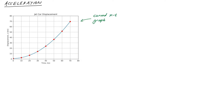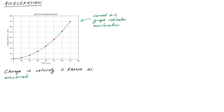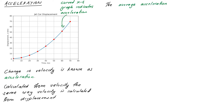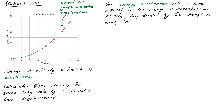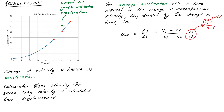Back to the jet car example: it had a curved position time graph, indicating that velocity was actually changing. When we have changes in velocity, that's known as acceleration. We can define acceleration from velocity using exactly the same method we used to define velocity from displacement. Average acceleration over an interval is the change in instantaneous velocity, ΔV, divided by the change in time, ΔT: A_avg = ΔV/ΔT = (Vf − Vi) / (Tf − Ti), with units of meters per second squared (m/s² or m·s⁻²).